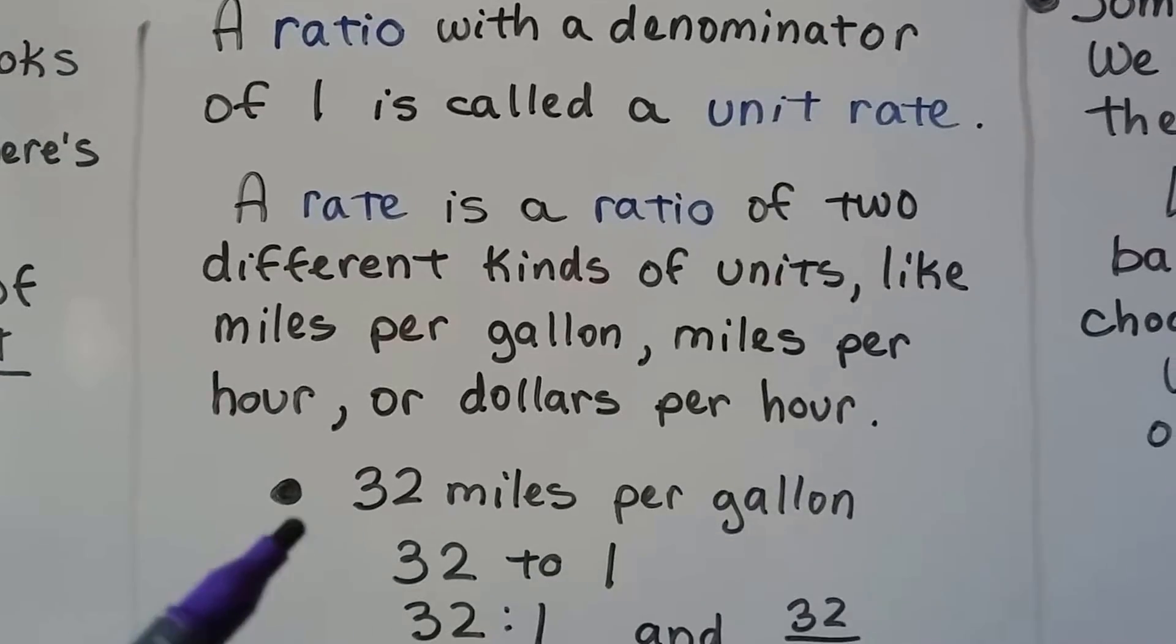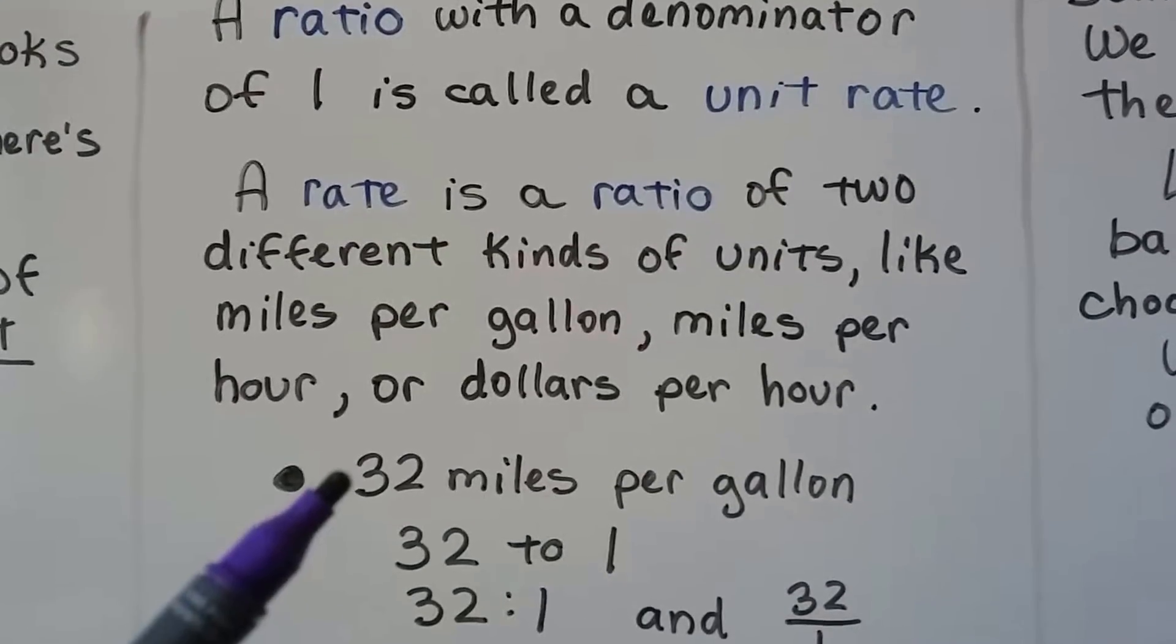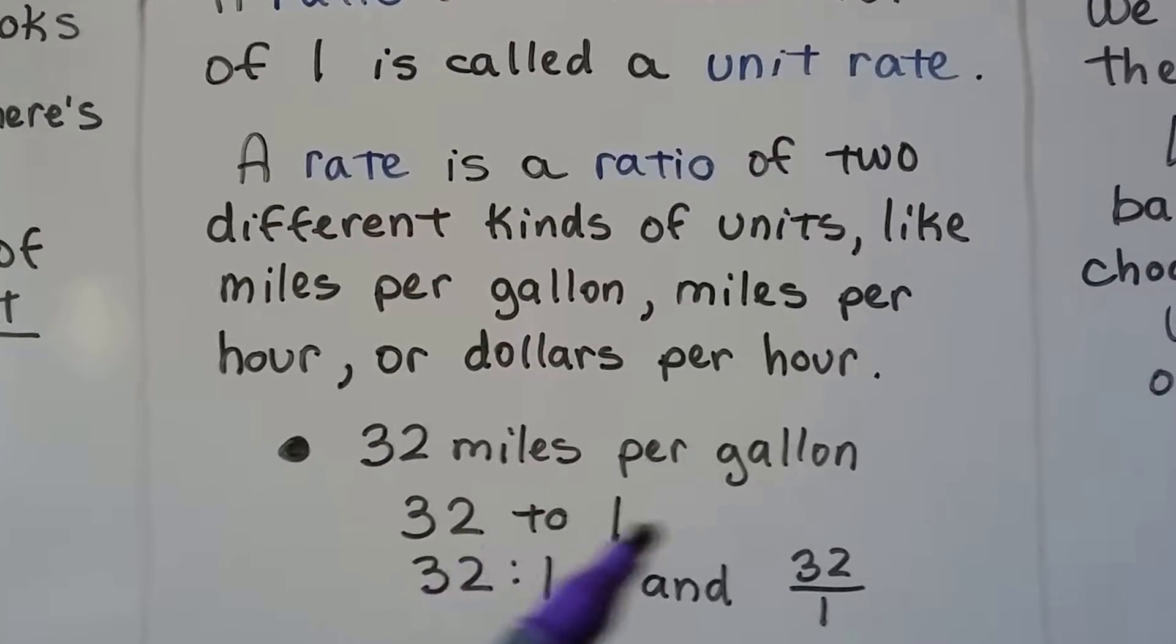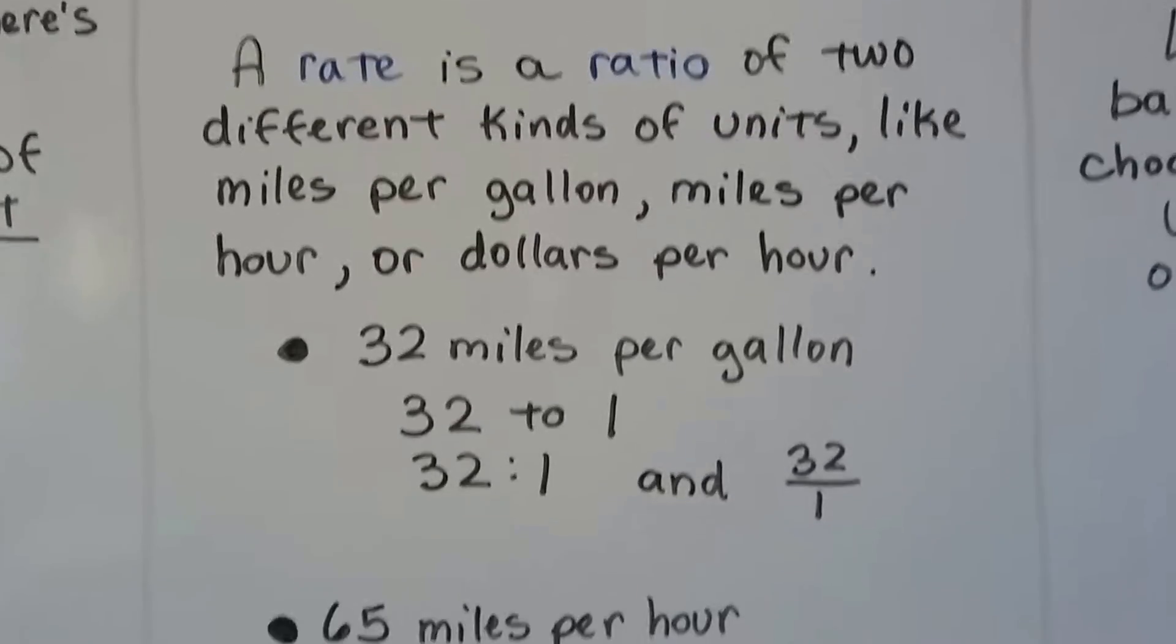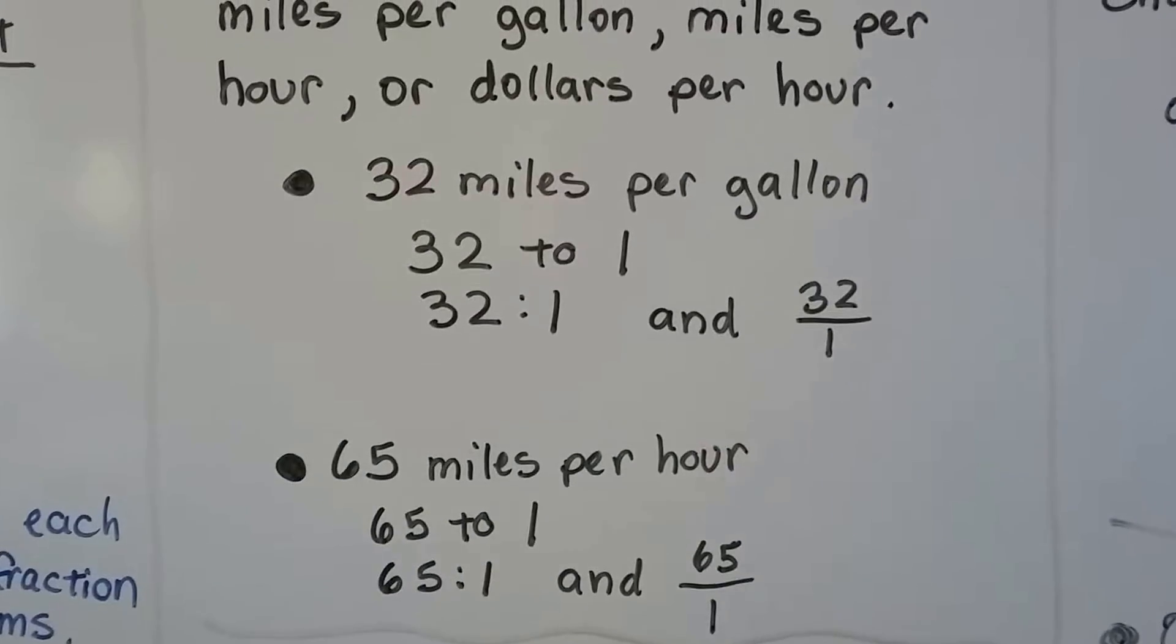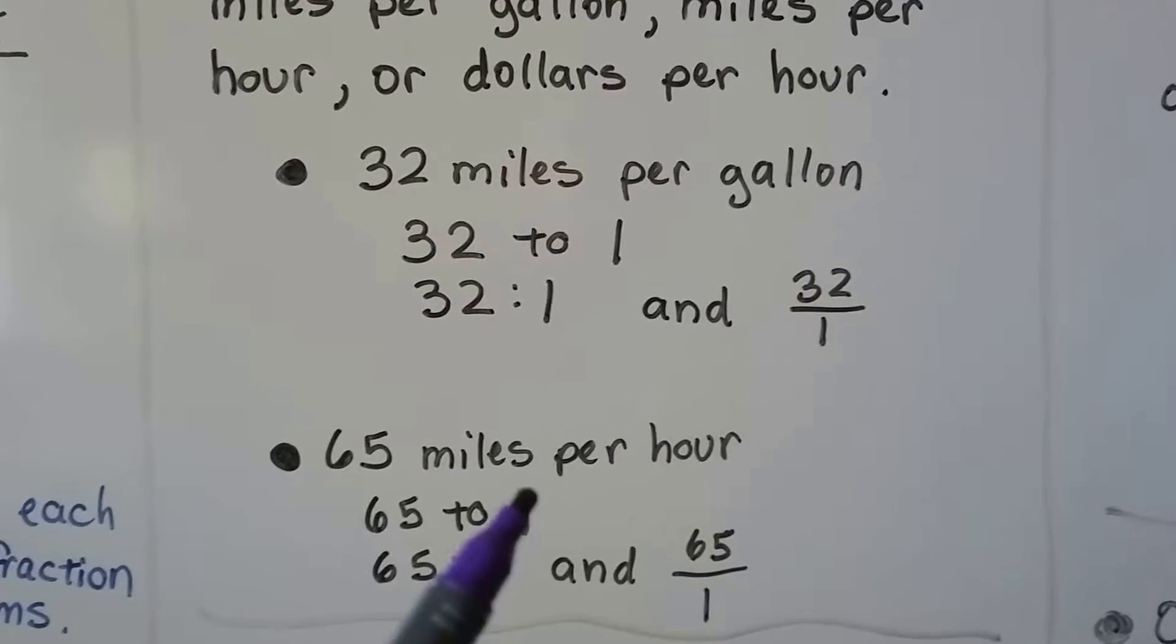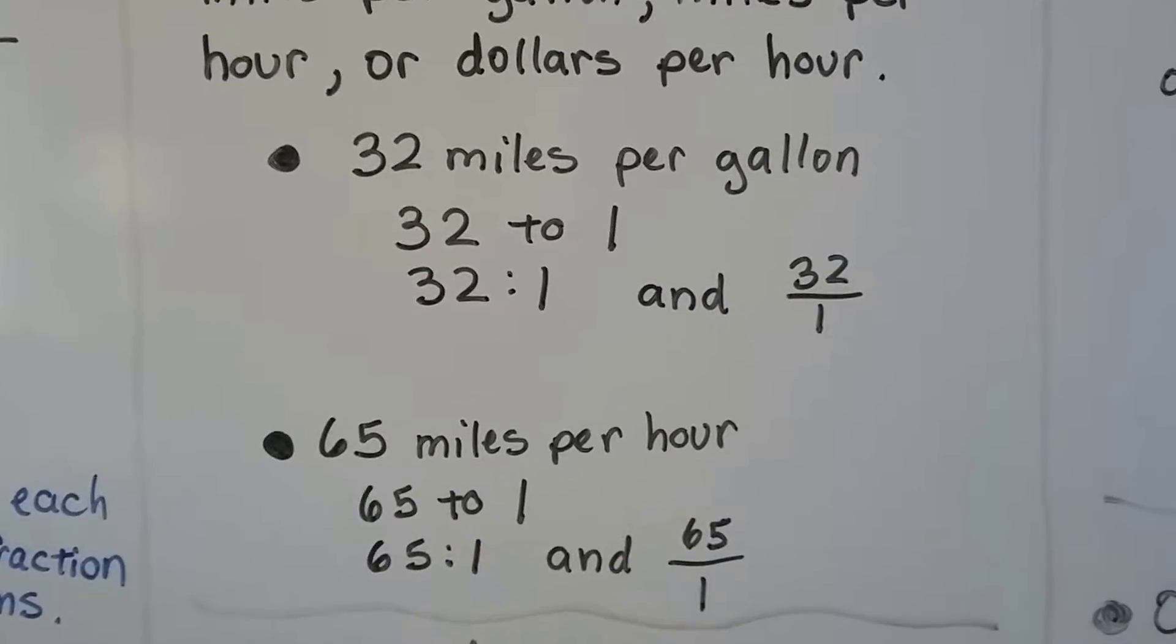If we get 32 miles per gallon in our car, it would be a ratio of 32 to 1. We got 32 miles for every 1 gallon. If we drove 65 miles per hour, the ratio is 65 miles to 1 hour - 65 to 1.